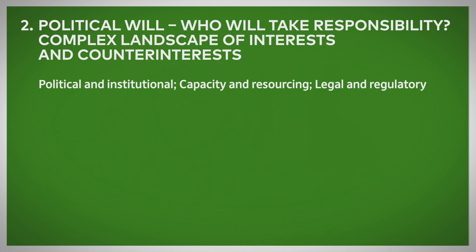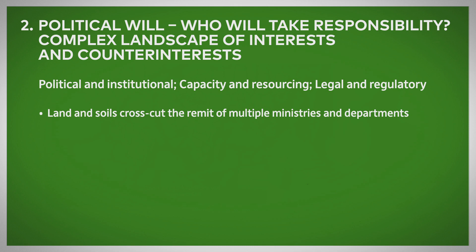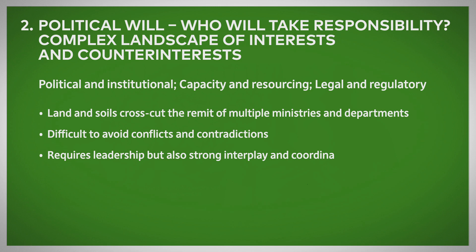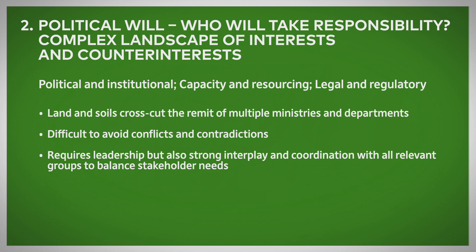The second example relates to political will — who's going to take responsibility? The landscape is complex with a whole range of different interests and counter-interests. Land and soils cross-cut the remit and responsibilities of multiple different ministries and departments, making it difficult to avoid conflicts and contradictions. One department might have a policy around forest use, while another deals with the environment more generally. Decisions made in one sector can undermine the efforts of another. What is really required is leadership, but also strong interplay and coordination between all those different relevant groups to help balance the needs and priorities of all the different stakeholders involved.